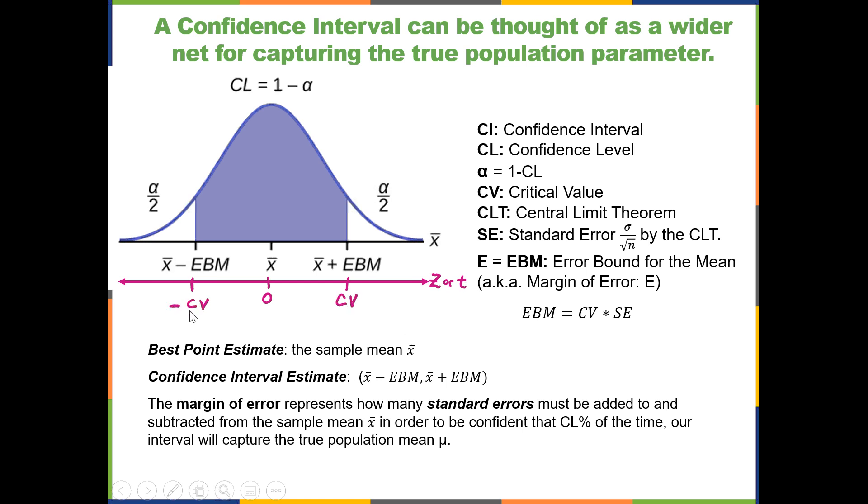So you'll have a negative critical value and a positive critical value. The positive critical value is used in calculating your margin of error. Only use the positive critical value as the margin of error is a distance, and it needs to be positive.